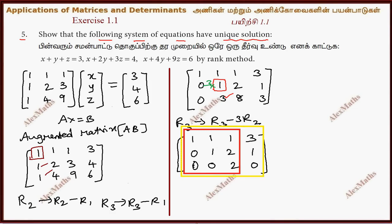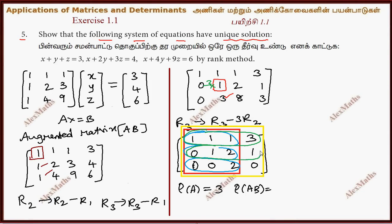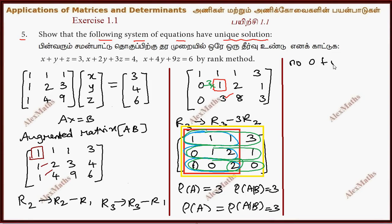The rank of the augmented matrix [A|b]: counting the non-zero rows — this is row 1, row 2, row 3 — all non-zero, so rank is 3. Rank of A equals rank of [A|b], which equals 3. The number of unknowns equals 3. Therefore, it has a unique solution.